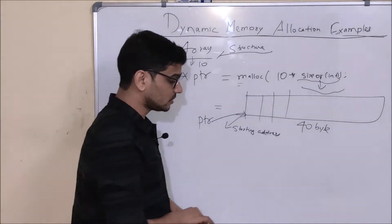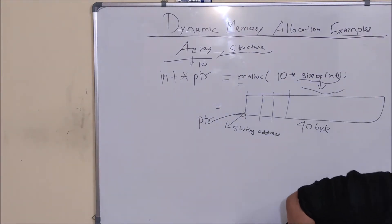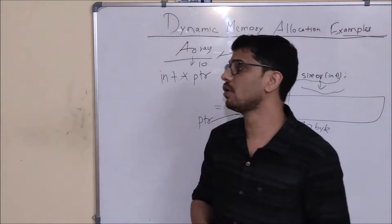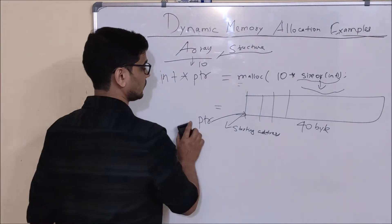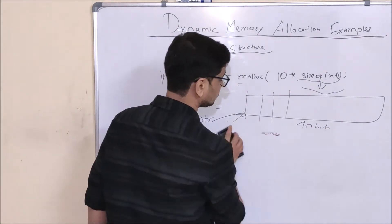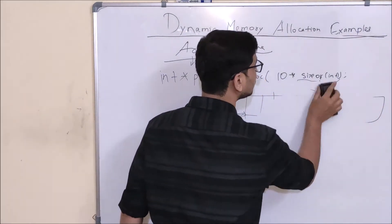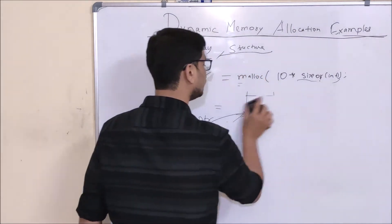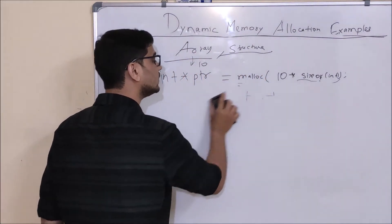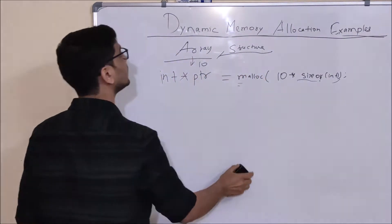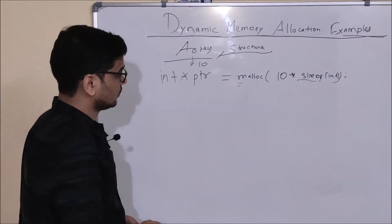So basically this PTR will be pointing to the starting address of this particular 40-byte block. Now let's see how I am going to use this 40-byte memory block as an integer array. To do that we have two techniques: one is directly using the pointer dereferencing technique, and another is the array technique.